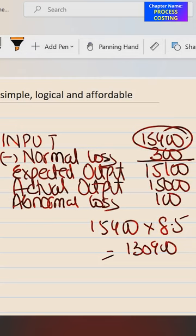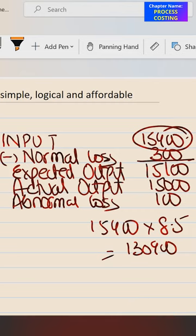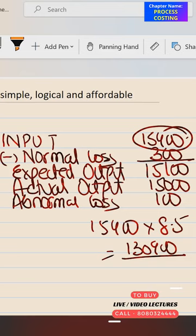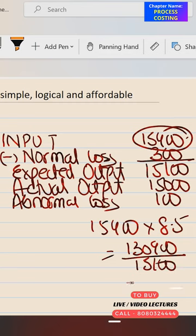On the debit side of the process account it will be 130,900. We always subtract scrap value of normal loss, which is not given, so forget it. Beyond that, we divide by expected output, which is 15,100. So 130,900 divided by 15,100 gives cost per unit of output: 8.668.